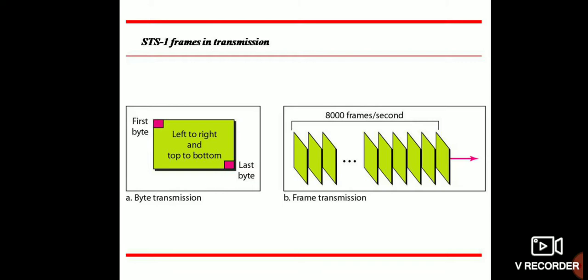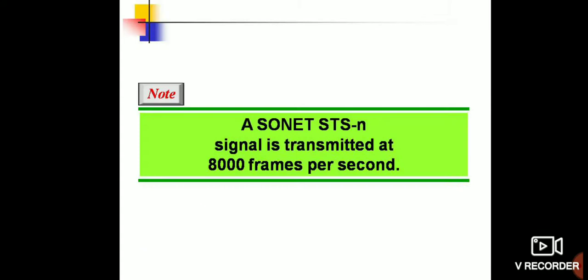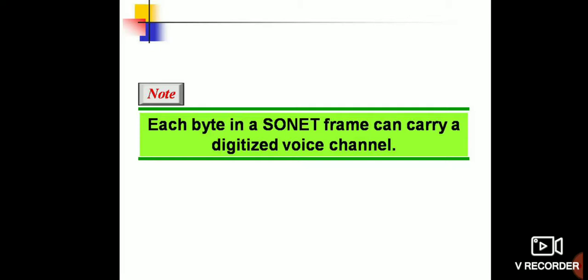STS-1 transmissions go left to right and top to bottom, 8000 bytes per second. A SONET STS signal is transmitted at 8000 frames per second. Each byte in the SONET frame can carry a digitized voice channel.